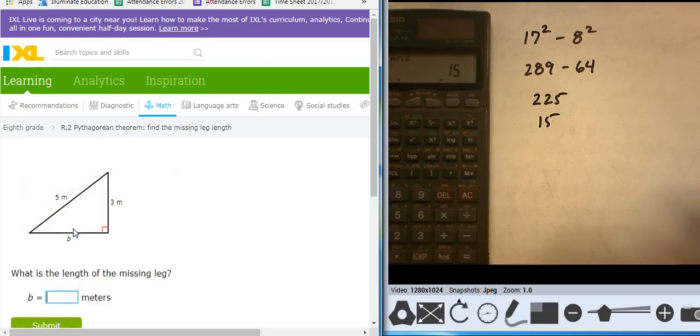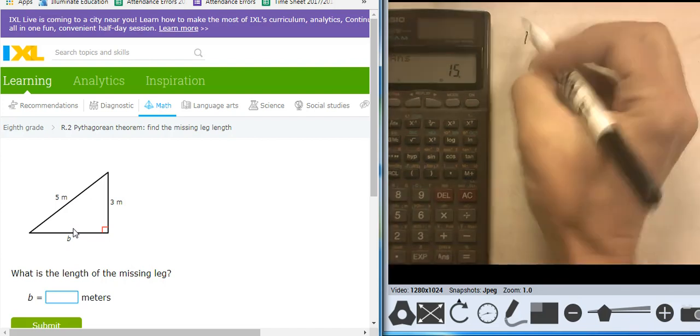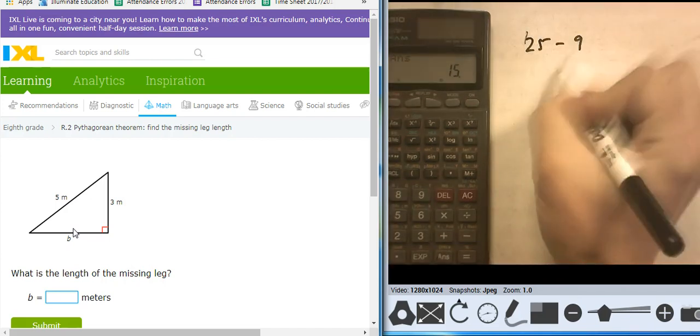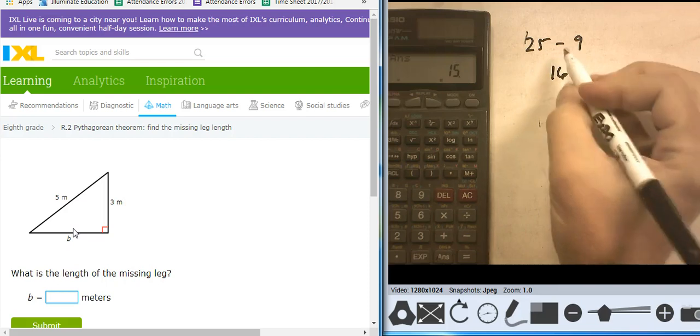Cool. So this is going to be 5 squared minus 3 squared, so I've got 25 minus 9, that takes me to 16. Take the square root of that, takes me to 4.